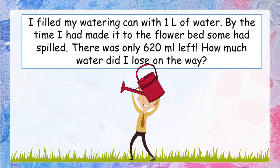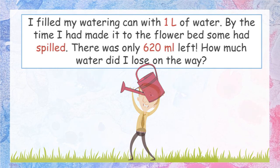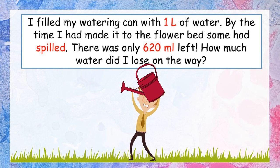I filled my watering can with 1 litre of water, but by the time I made it to the flower bed, some of it had spilled — there was only 620 millilitres left. How much water did I lose on the way? Pause the video and find the most important information. The key pieces are the 1 litre in the watering can, the word 'spilled' — because that tells us the type of sum — and 620 millilitres left in the can. Pause the video and try to solve this one yourself.